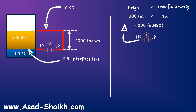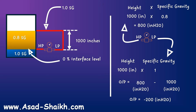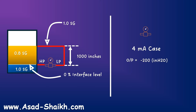Now let us look at what is going to happen at the LP side of the transmitter. The LP side uses the same formula — height into specific gravity. The height is still 1000 inches, multiplied by the specific gravity of the heavy fluid, which is water in this case: 1000 into 1 equals 1000 inches of water column. So the output is going to be HP minus LP: 800 inches of water column minus 1000 inches of water column equals minus 200 inches of water column. So with zero interface level, your transmitter output in DP should be minus 200 inches of water column, corresponding to 4 mA.